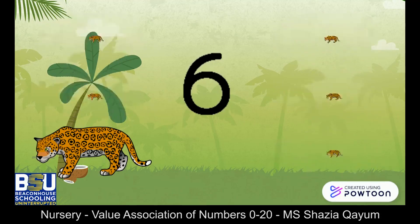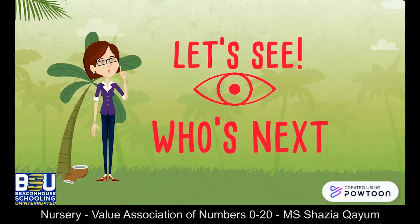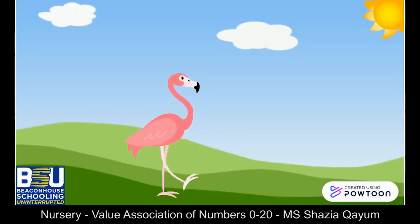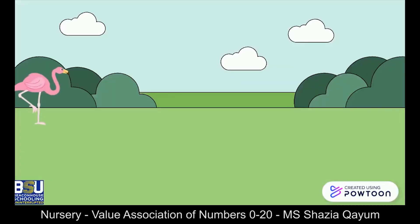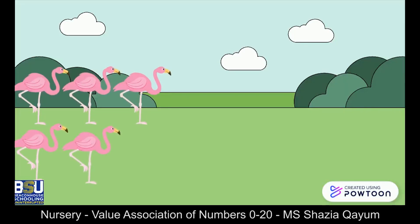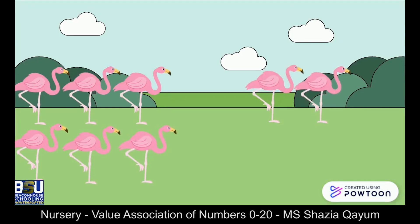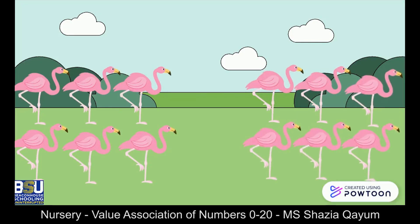Let's see who is next. Hello, pretty flamingo — I love your pink feathers! Let's count them together. One, two, three, four, five, six, seven, eight, nine, ten, eleven, twelve. We have twelve flamingos in the jungle.